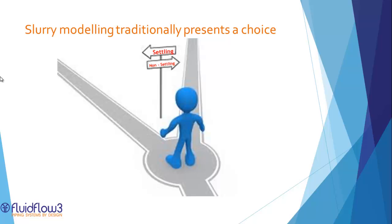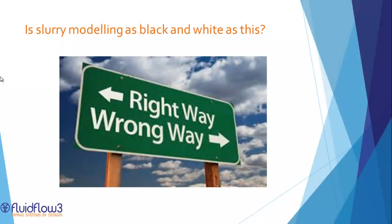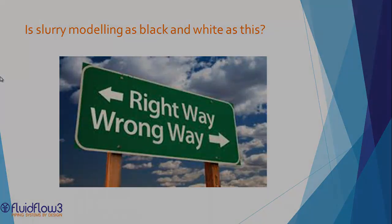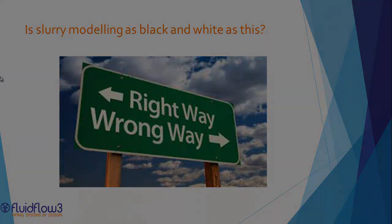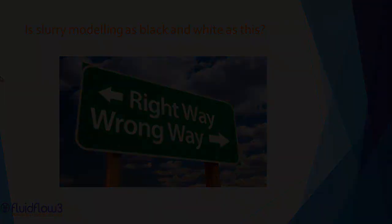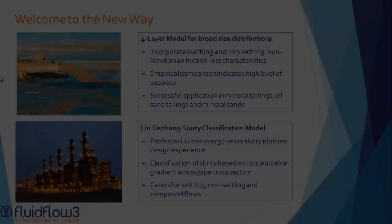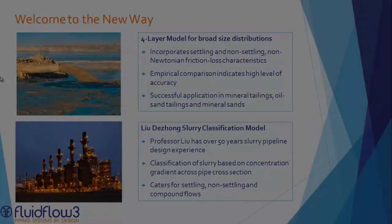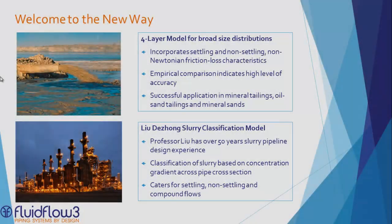Until now, slurry modeling software has forced the designer to make a choice: to model the slurry as a heterogeneous settling slurry, or as a non-Newtonian non-settling slurry. Slurries are rarely as black and white as this. In reality, slurry systems often behave as a combination of these two flows. Broad size distributions and variation in slurry composition due to process instability lead to situations where the friction loss associated with both slurry classifications must be considered.